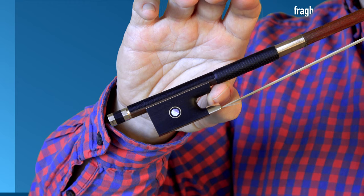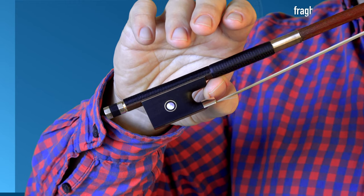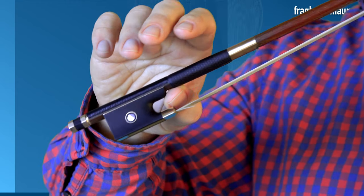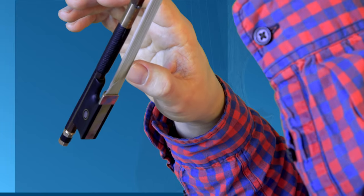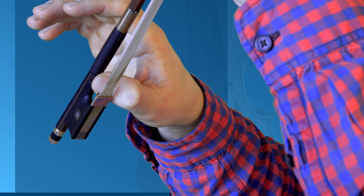Your thumb is now touching the stick of the bow as well as the pad with the left side of your thumb tip. The right side of your thumb tip is sitting on the frog of the bow, its position remains opposite the second finger.